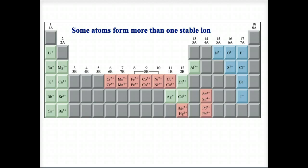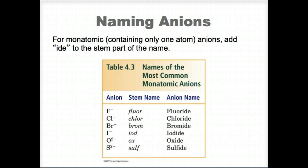Transition metals can form more than one stable ion. An ionic compound like sodium chloride, known as table salt, has an ionic bond forming a very strong attractive force between the sodium ion and the chloride ion.